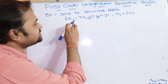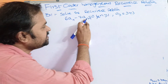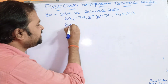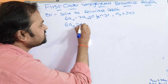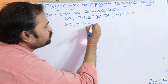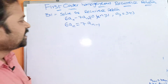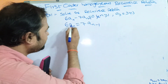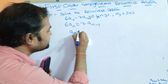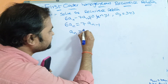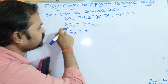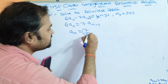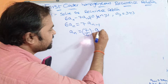We have 6AN − 7AN−1 = 0. This can be written as 6AN = 7·AN−1. Converting to standard form, AN = (7/6)·AN−1.